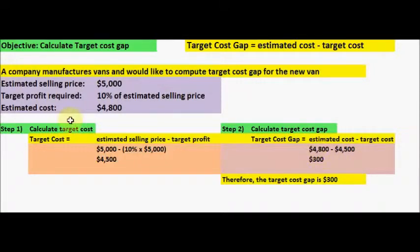So you take the estimated cost which has been given is $4,800, and then you minus the target cost of $4,500 that we just calculated, to get the target cost gap of $300.